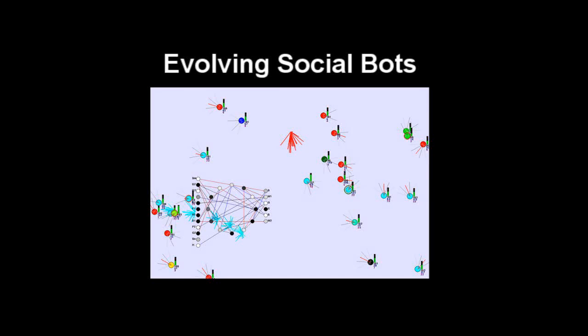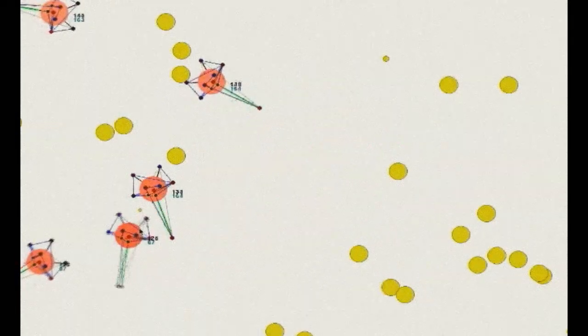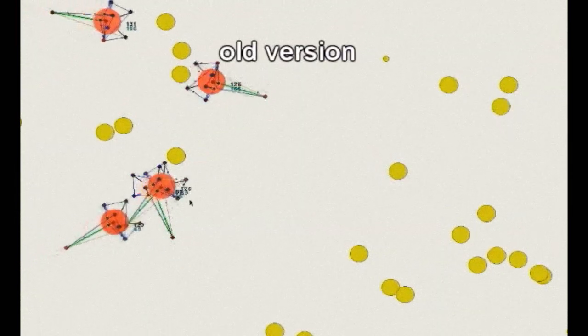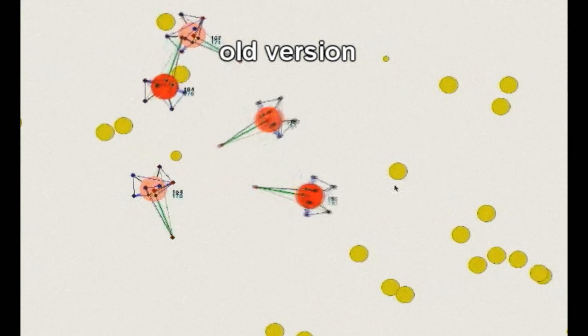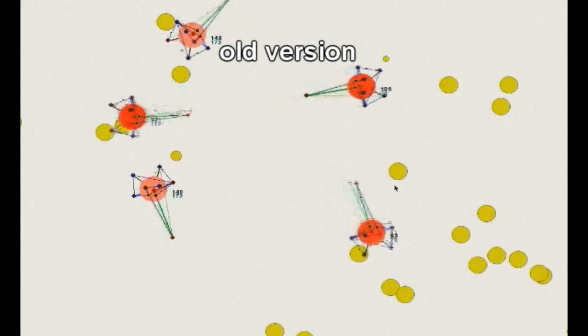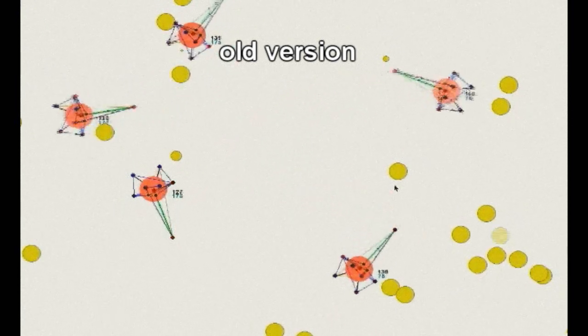This is the second generation of my evolutionary simulation. The old version had several shortcomings, but the biggest one was probably that all agents were independent and had no way of interacting with each other. In contrast, social behavior and group dynamics is the primary focus of the new simulation.